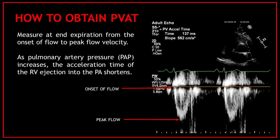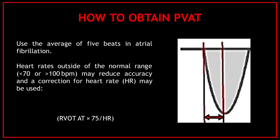Measure at end-expiration from the onset of flow to peak flow velocity. As pulmonary artery pressure increases, the acceleration time of the right ventricular ejection into the pulmonary artery shortens. Always use the average of 5 beats in atrial fibrillation. Heart rates outside of the normal range may reduce accuracy; if this is the case, a correction for heart rate may be used — the correction formula is shown here.